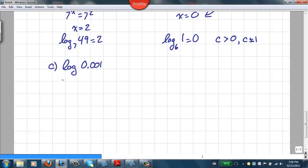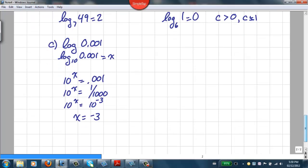That means that log of 0.001 is like saying log base 10 of 0.001 is equal to x. That means 10 to the x is equal to 0.001, or 10 to the x is equal to, now 0.001 that's 1/1000, or 10 to the x is equal to 10 to the negative 3. So that means x equals negative 3. We can say then that log of 0.001 is equal to negative 3.